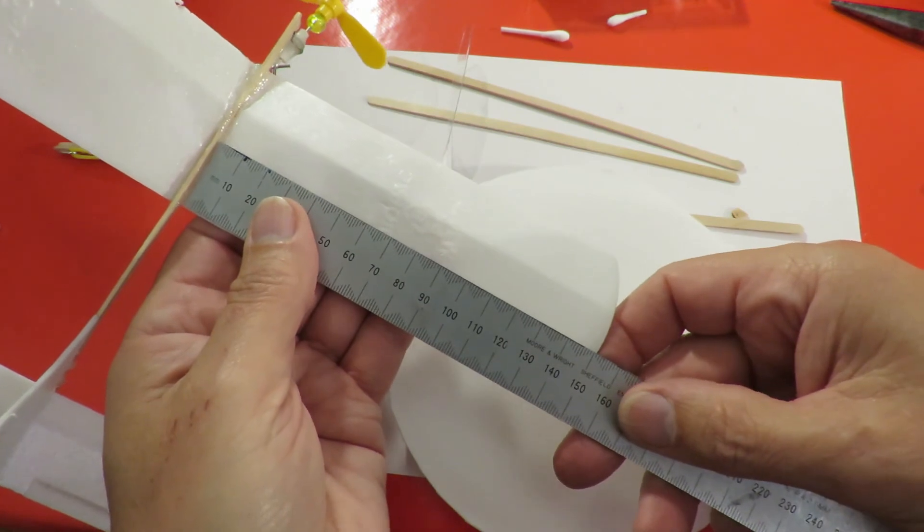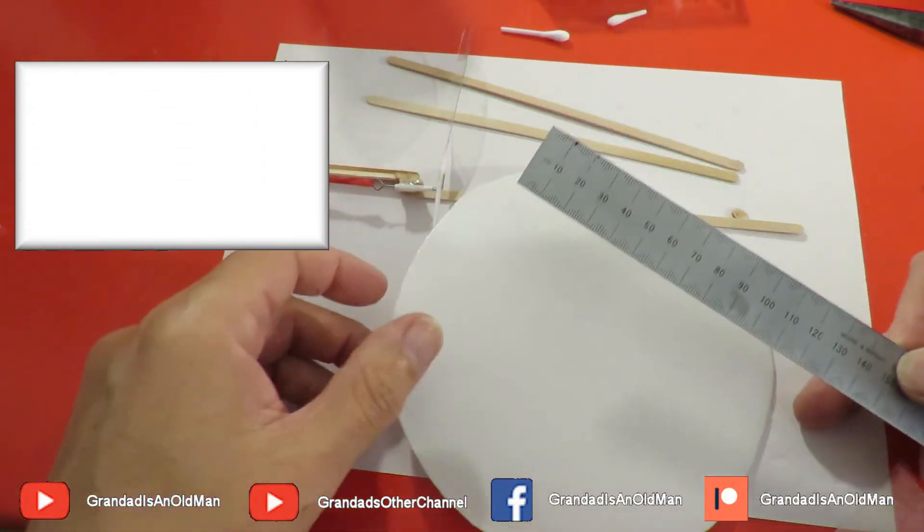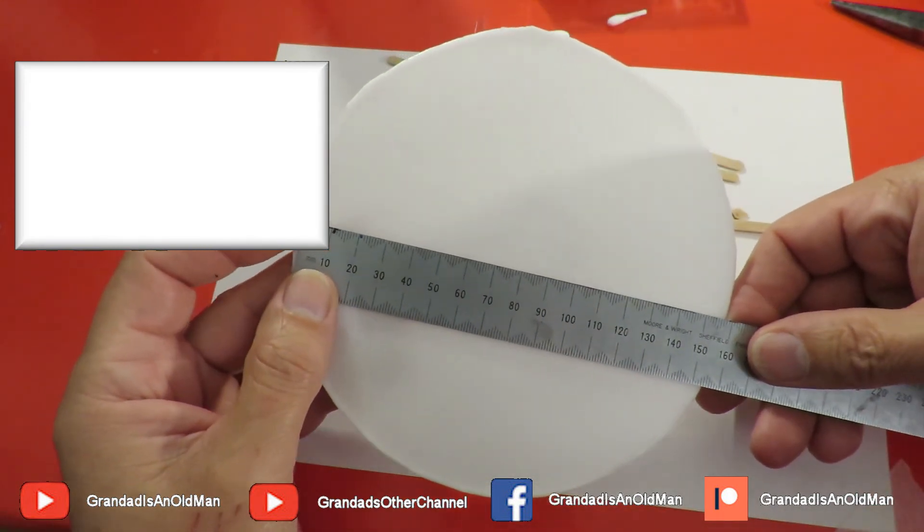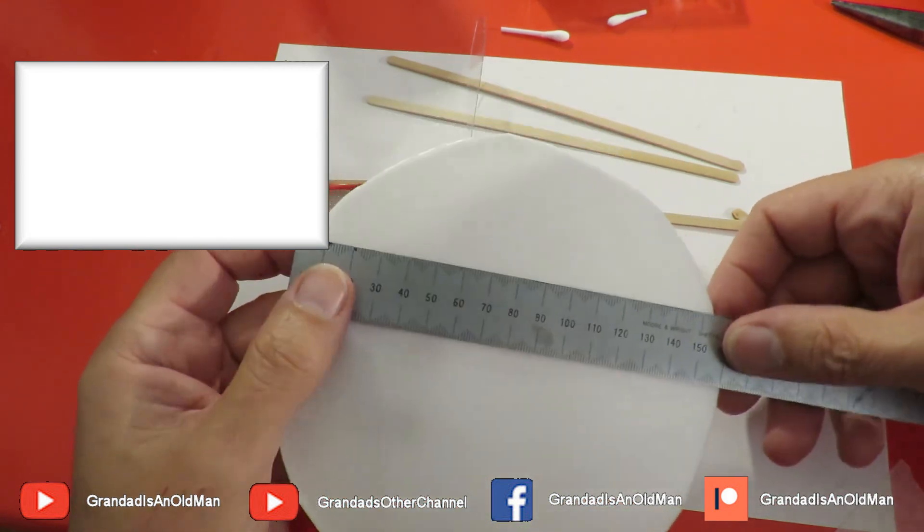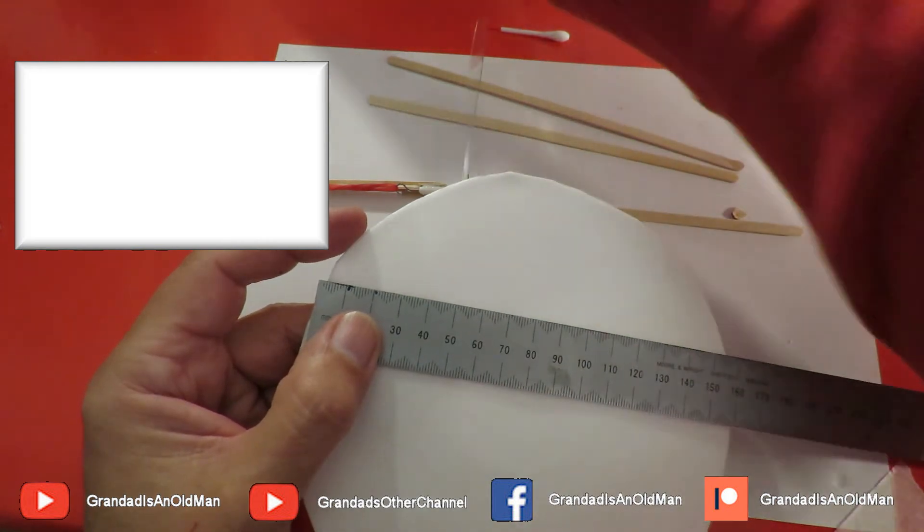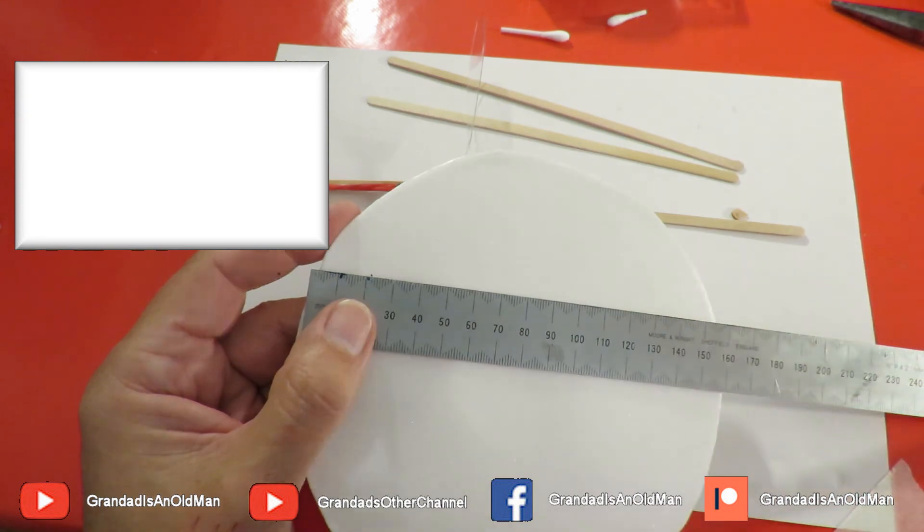And then the span that's 150, and the reason it's 150 is that was as much as I could get out of a single plate. So that's what I'll do. I'll cut this up just straight like that and then we'll glue it on top. And that's it.